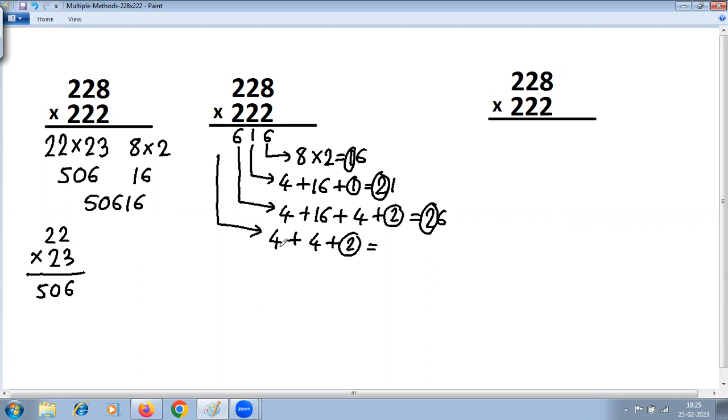So 4 plus 4 is 8, plus 2 is 10. So you have to write 0, carry 1. And the last step here: 2 into 2 plus carry 1 from previous step, 4 plus 1 is 5. 50616. The answer has to be the same.